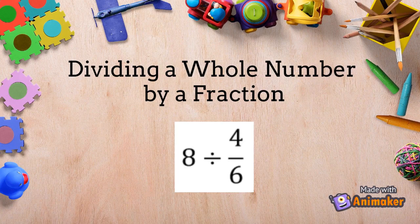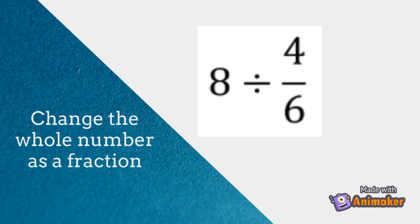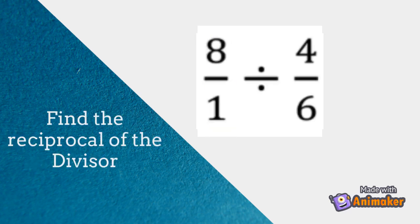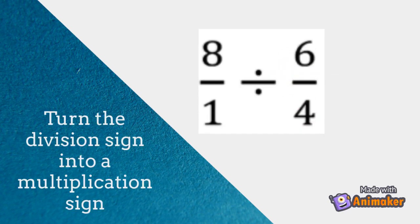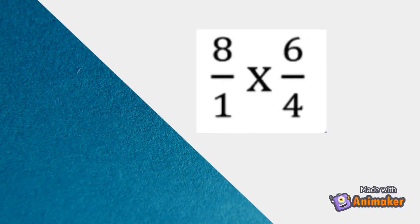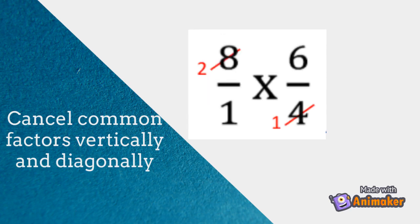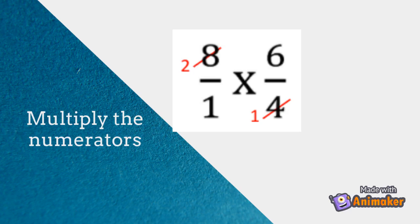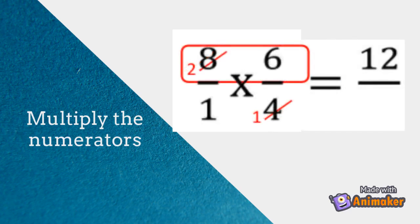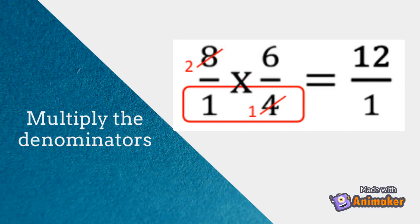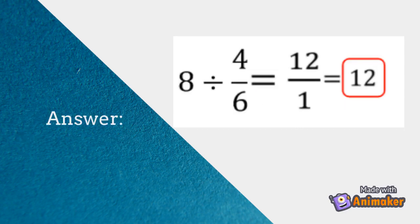Dividing a whole number by a fraction. Change the whole number as a fraction. Find the reciprocal of the divisor — since the divisor is a fraction, just flip it over. Turn the division sign into a multiplication sign. Cancel common factors vertically and diagonally. 8 and 4 are both divisible by 4, so divide both by 4. 8 divided by 4 equals 2; 4 divided by 4 equals 1. Multiply the numerators: 2 times 6 is 12. Multiply the denominators: 1 times 1 equals 1. So the answer of 8 divided by 4 sixths is 12.